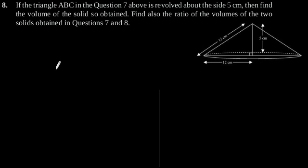Exercise 13.7, Question number 8. If the triangle ABC in question 7 above is revolved about the side 5 cm, then find the volume of the solid so obtained. Find also the ratio of the volumes of the two solids obtained in questions 7 and 8.